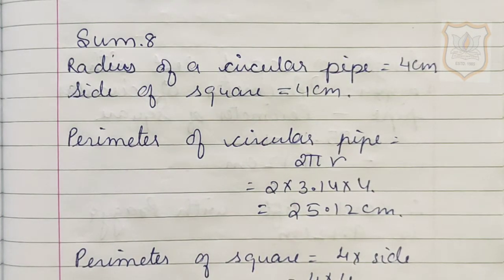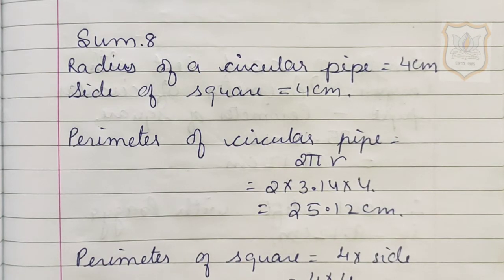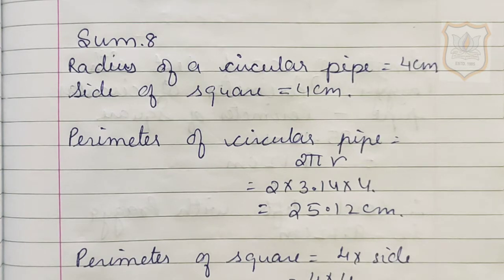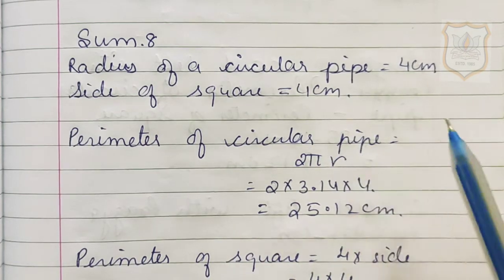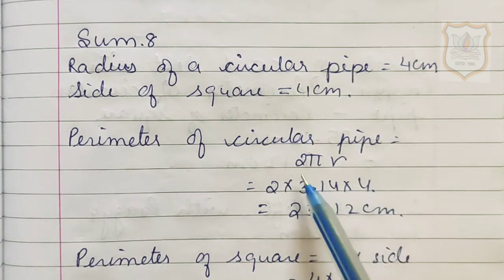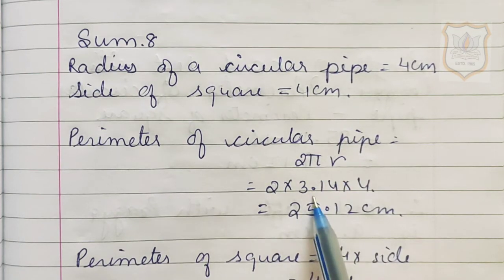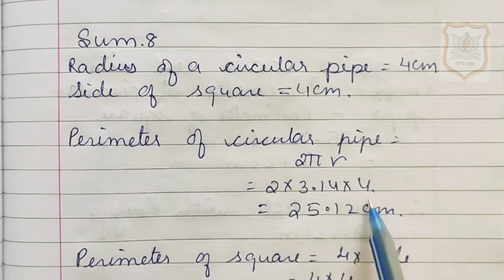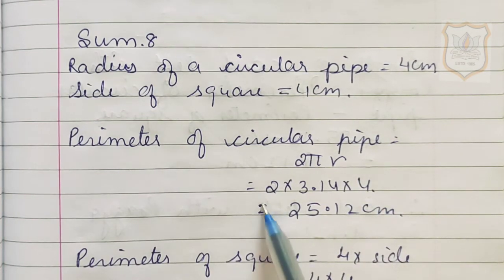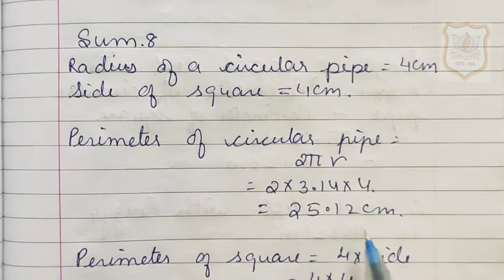Solution for sum number 8: radius of the circular pipe is equal to 4 cm, and side of the square is equal to 4 cm. First we will find out the perimeter of the circular pipe — that is circumference of the circle — to find out the length of the cord. The formula is 2 pi r. So 2 multiplied by 3.14 multiplied by 4 equals 25.12 cm.